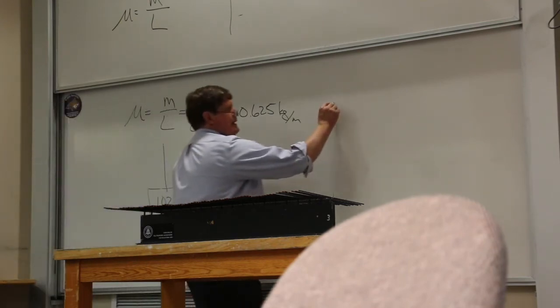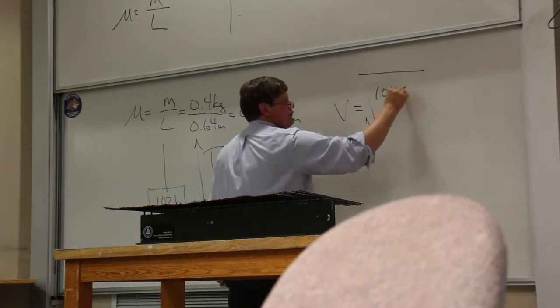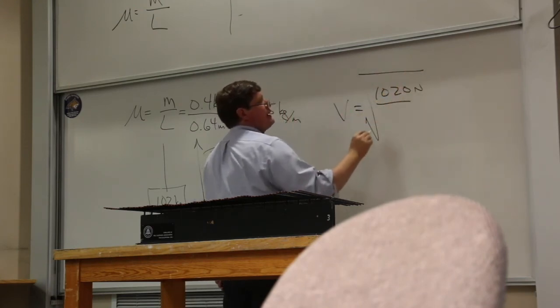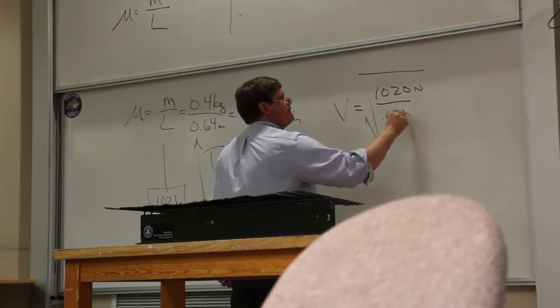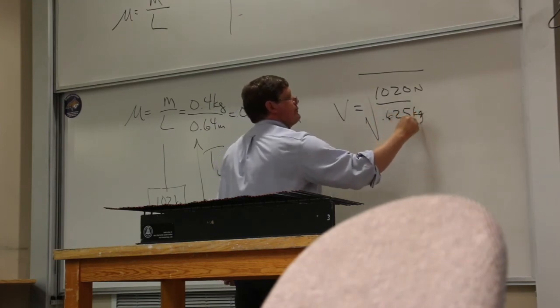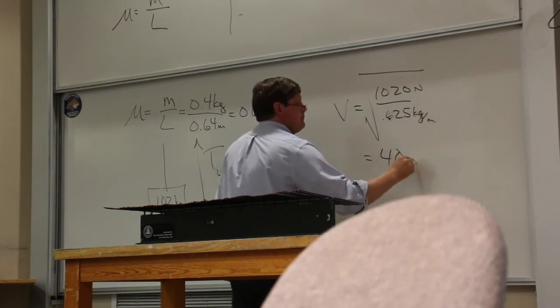Now, if I go in and solve for the velocity, that's going to be 1,020 newtons divided by 0.625 kilograms per meter, and that's going to give me 40 meters per second.